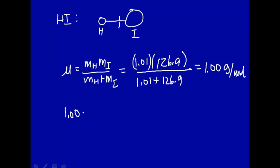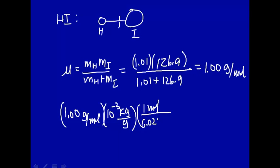Let's continue this problem, 1.00 gram per mole, and then we have 10 to the minus 3 kilogram per gram, and then we have 1 mole over 6.02 times 10 to the 23rd molecules, and that comes out to be 1.66 times 10 to the minus 27 kilogram per molecule.